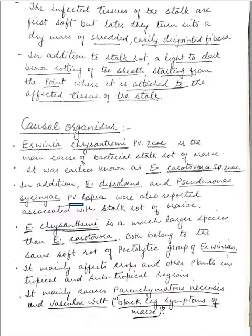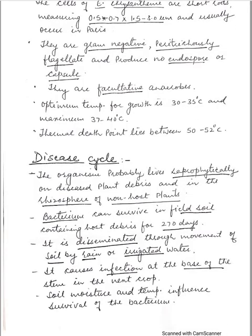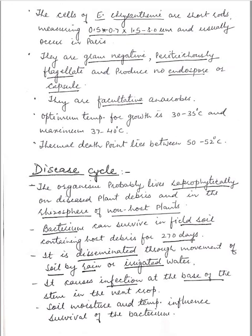The cells measure 7 × 1.5 to 3 millimicrons and usually occur in pairs. They are gram-negative bacteria, peritrichously flagellate, produce no endospore or capsule, and are normally facultative anaerobes. Optimum temperature for growth is 30 to 35°C and maximum is 37 to 40°C, and the thermal death point lies between 50 to 52°C.